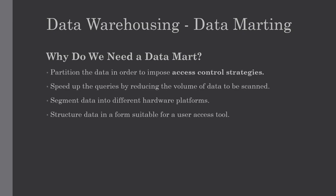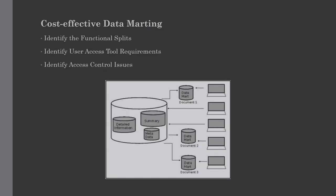Before data marting we must ensure the strategy is appropriate for the particular business solution — keep this in mind every time you use the data marting technique. Now let's discuss the cost-effective data marting technique. There are three steps to follow. The first is to identify the functional splits — we determine if the organization has a natural functional split by looking at departmental splits and whether departments use information in isolation from the rest of the organization.